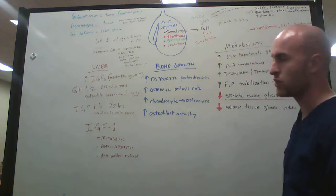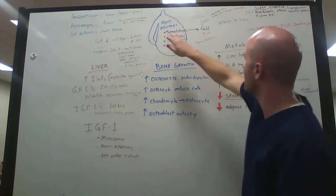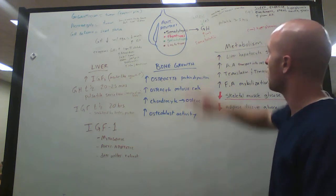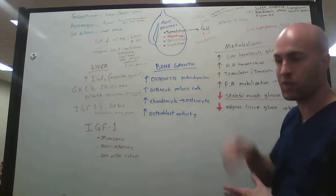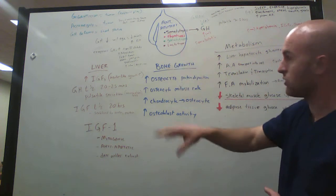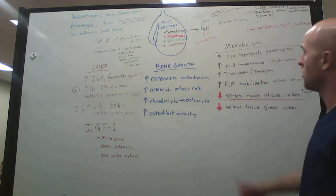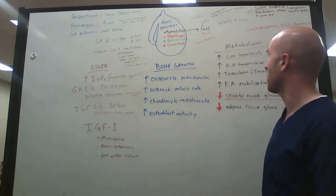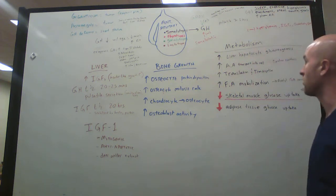The one we're talking about in this lecture particularly is growth hormone and the effects of growth hormone in the body. So somatotropes release growth hormone in response to growth hormone-releasing hormone, which comes from the hypothalamus, goes into a capillary bed, travels down, and binds to these cells.